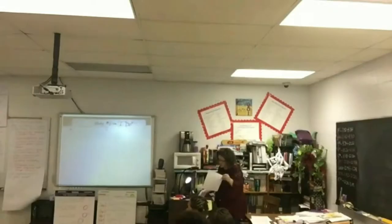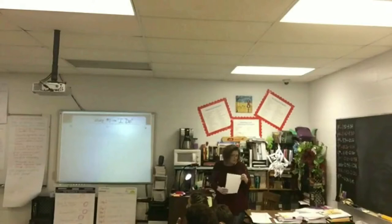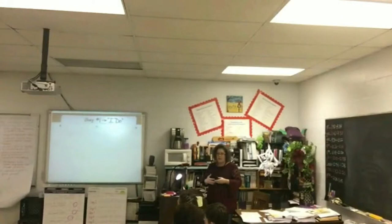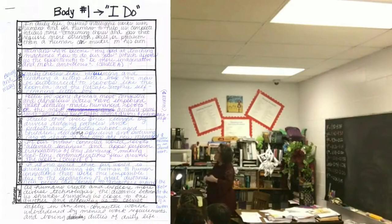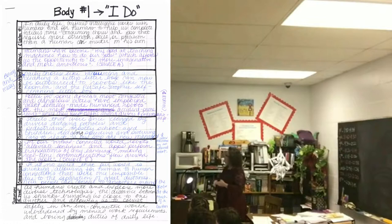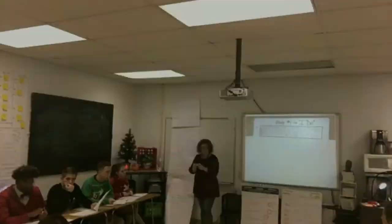The first thing we need to do is state our first claim, and our first claim needs to have something to do with daily life. We start it like this: 'In daily life, artificial intelligence works with humans and for humans to help us complete tedious, time-consuming chores and jobs that require more strength, skill, or precision than a human can muster on his own.' Now look in your sources — can you find evidence that goes with AI working for and with humans in everyday life? Source D.